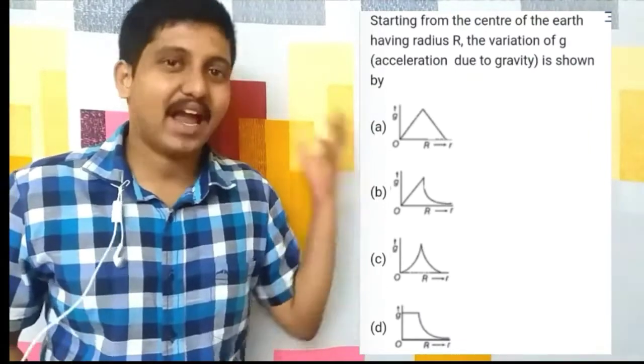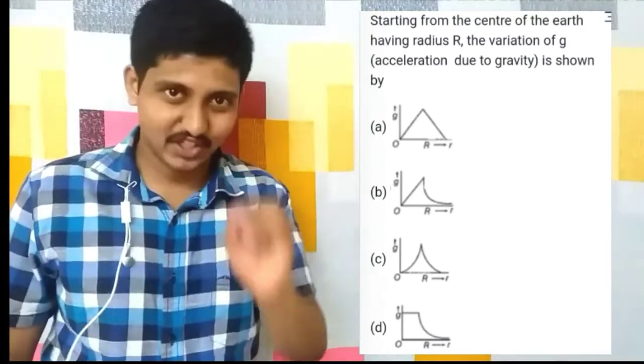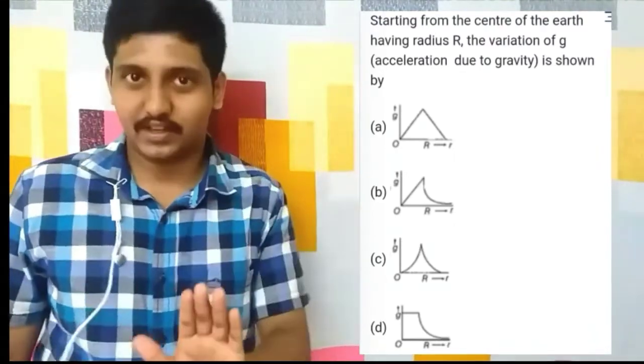How to address the graph-based questions? First of all, let's look at a previous year's question, and then based on that we will deal with all the various possibilities of graph questions that can come from the Gravitation chapter, which have actually come from entrance examinations. This previous year's question is: the variation of acceleration due to gravity g from the center of the earth is represented as which of the following figures?